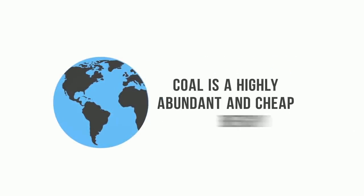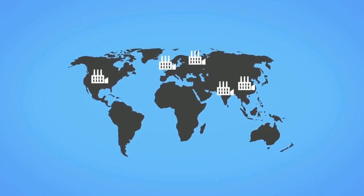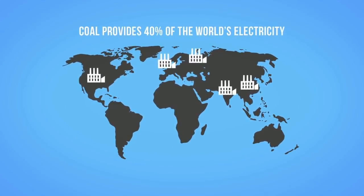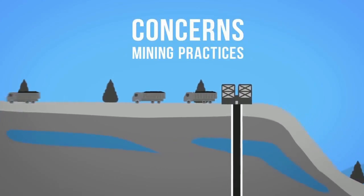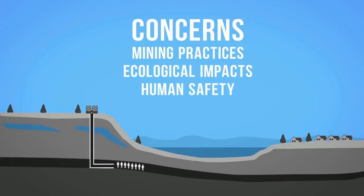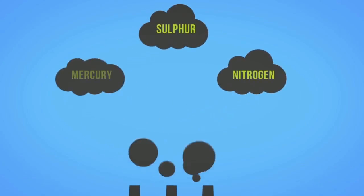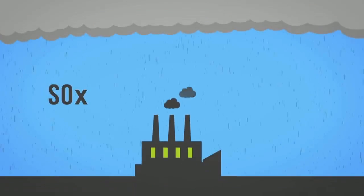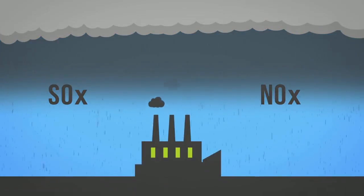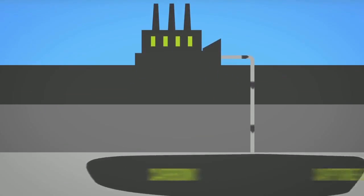Coal is a highly abundant and cheap energy resource that has powered the industrialization of many nations, providing 40% of the world's electricity. One major concern is the mining practices used to extract it, with ecological impacts and human safety issues as growing concerns. Coal is the most CO2-intensive fossil fuel when combusted and also contains sulfur, nitrogen, mercury, and heavy metals. SOx is a leading cause of acid rain, NOx contributes to smog, and particulates can harm human health. Concerns about climate change have prompted the development of clean coal technologies like carbon capture and storage.